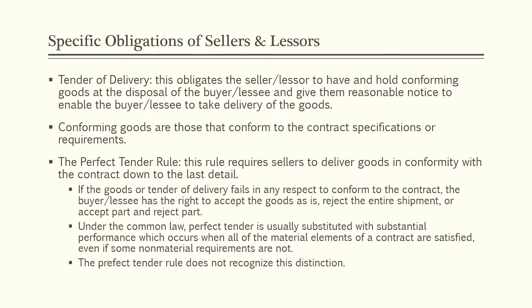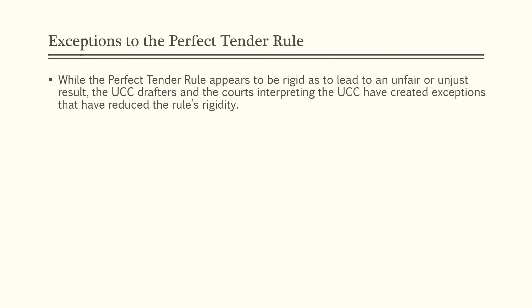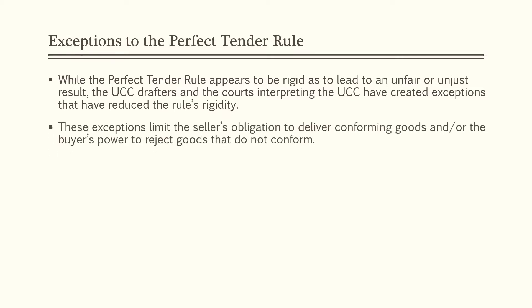Under the common law, perfect tender is usually substituted with substantial performance, which occurs when all of the material elements of a contract are satisfied even if some non-material requirements are not. The perfect tender rule does not recognize this distinction and can be used unfairly. Because of its potential for unfairness, there are exceptions to the perfect tender rule. While the rule appears rigid enough to lead to unjust results, the UCC drafters and courts have created exceptions that have reduced the rule's rigidity, limiting the seller's obligation to deliver conforming goods and the buyer's power to reject non-conforming goods.